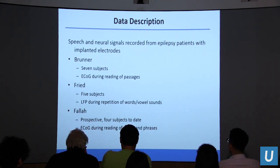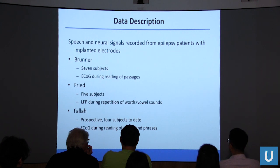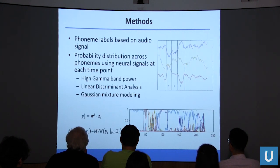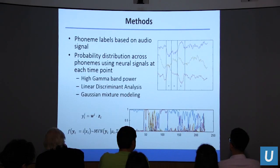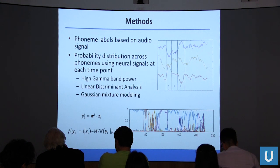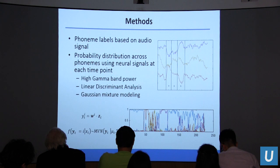We have three different datasets, a combination of prospective and retrospective, but today I'm focusing on the second, provided by Dr. Fried. The patients repeat vowel-consonant combinations or vowels in isolation. We then decode that speech from their neural signals by first breaking down speech into phonemes — the building blocks of spoken speech — and at every time point trying to recreate a probability distribution over phonemes about what the classifier thinks they were trying to say.